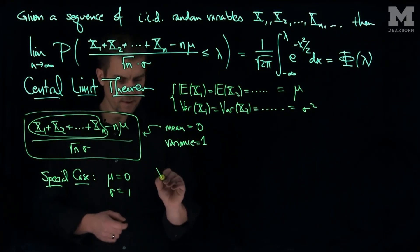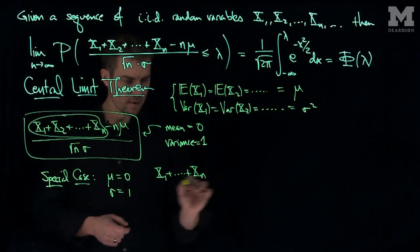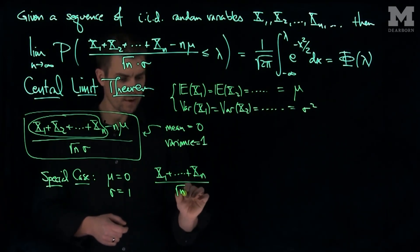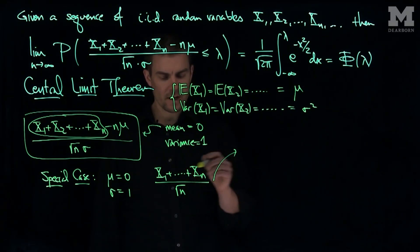Then if we think about this, then we have x1 plus xn over the square root of n. Well, if we look at this random variable, the expected value of this random variable.